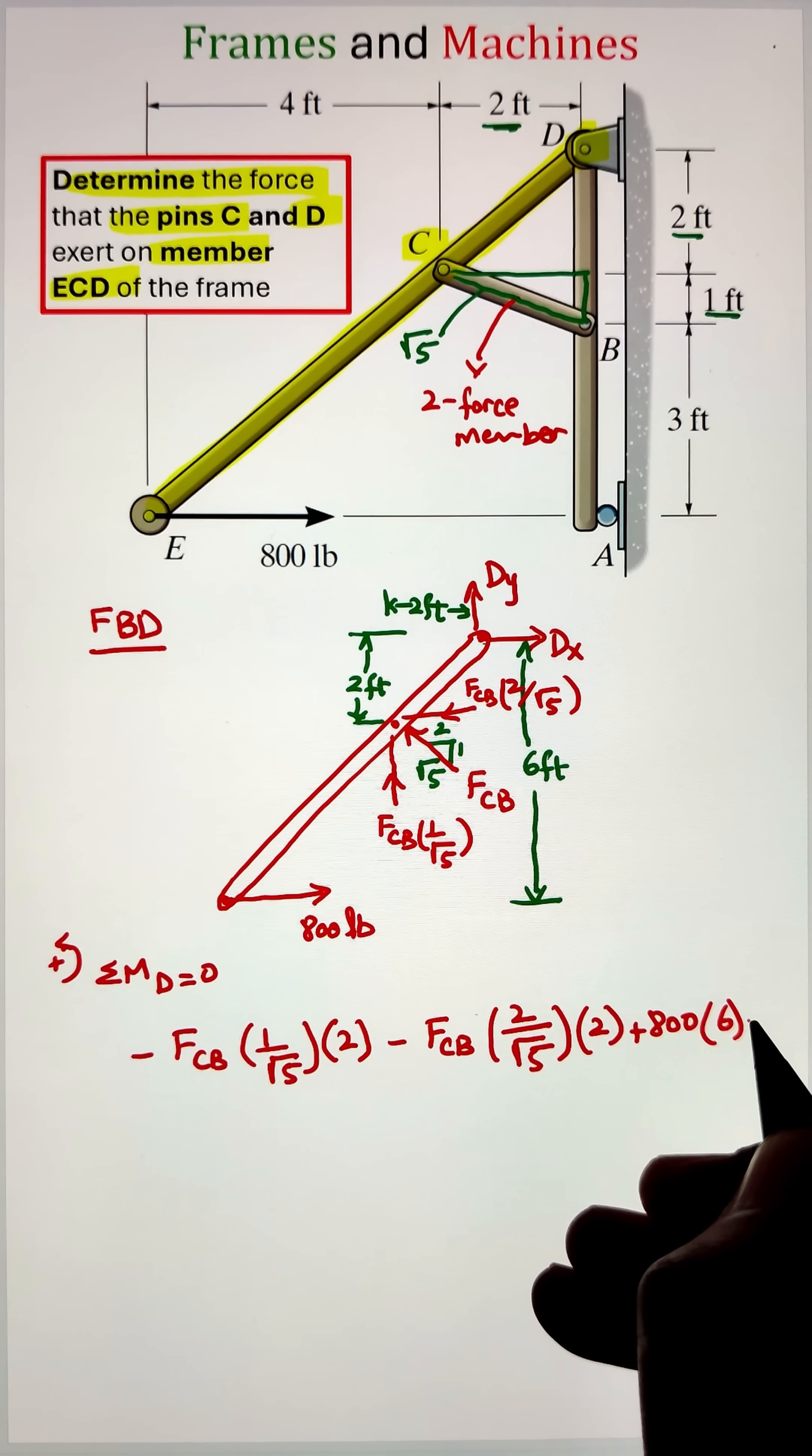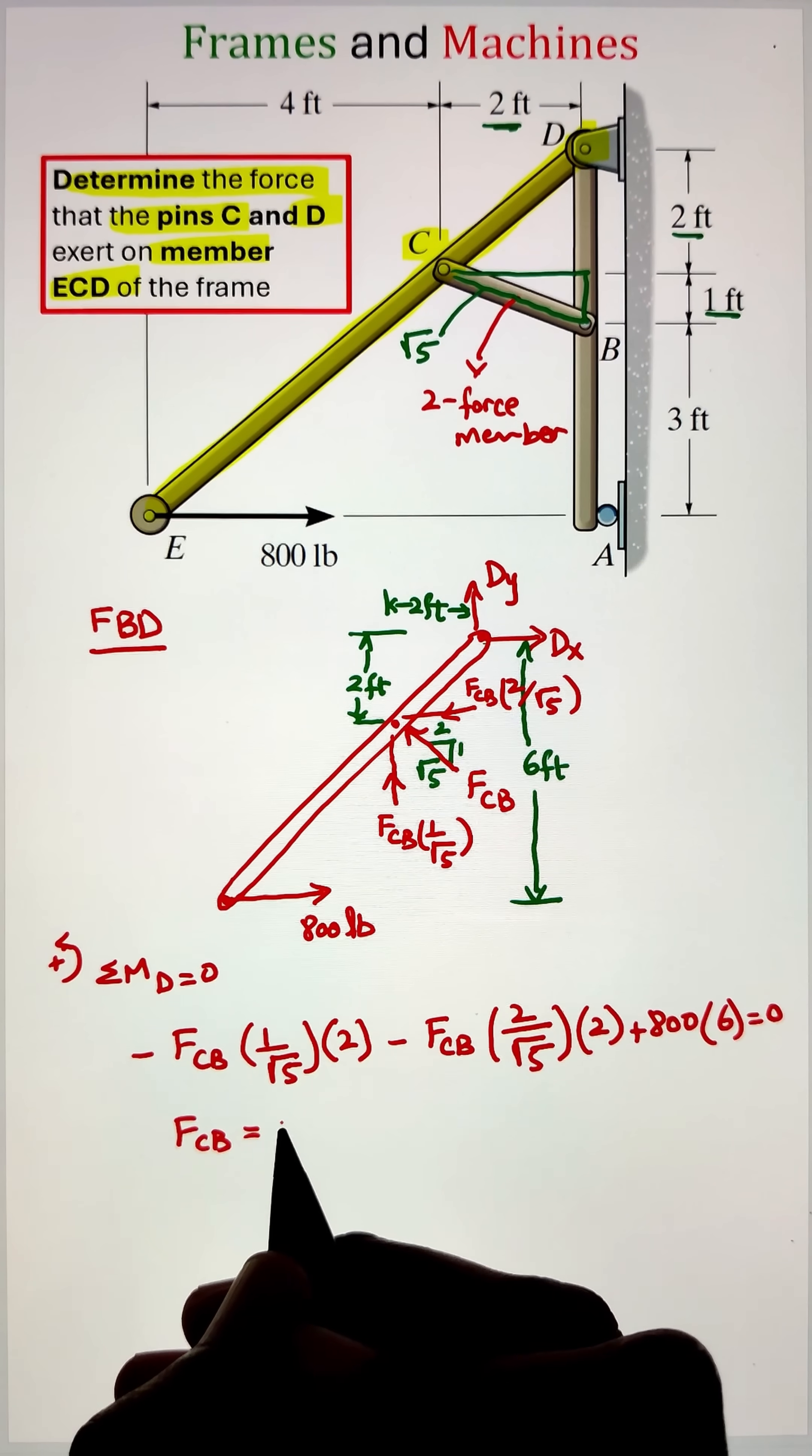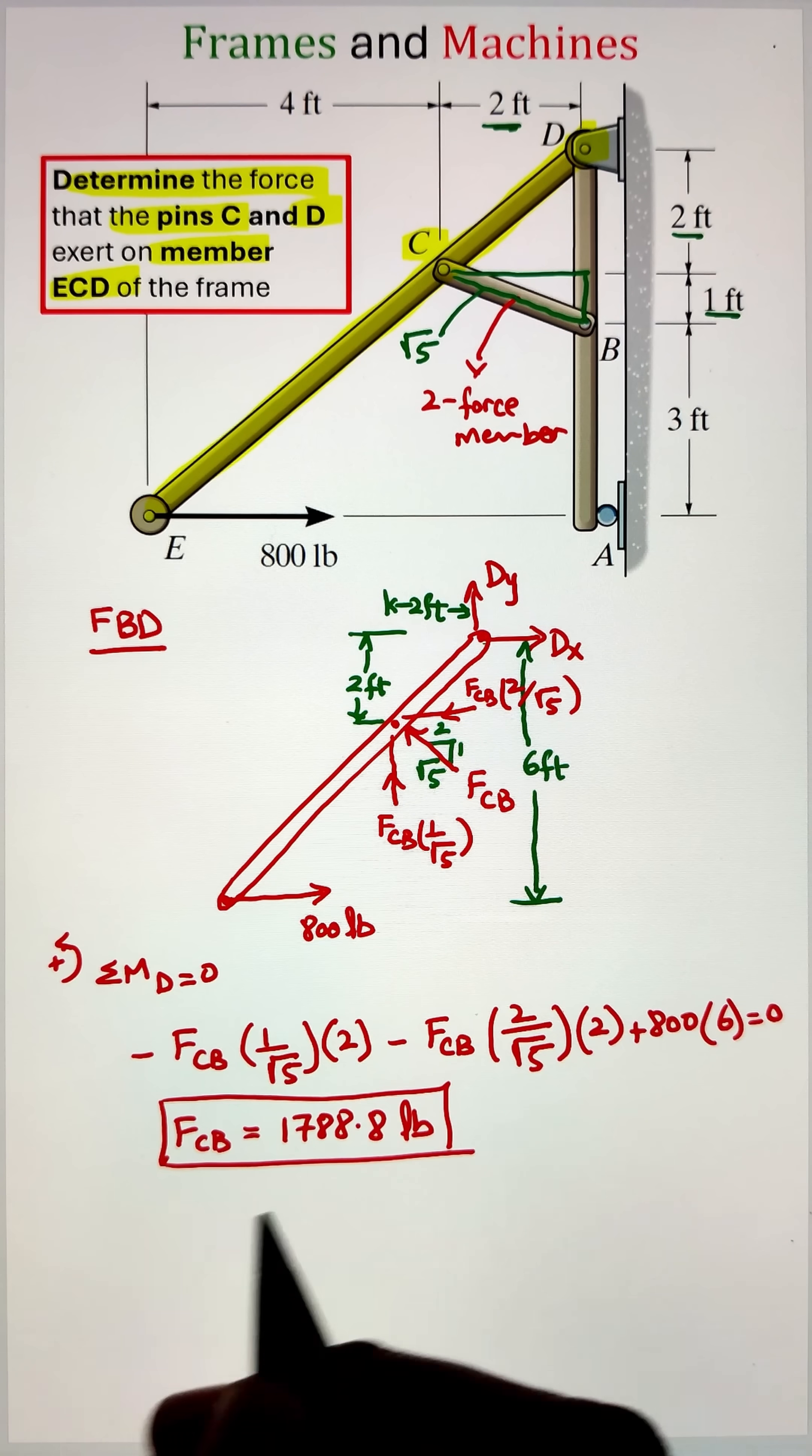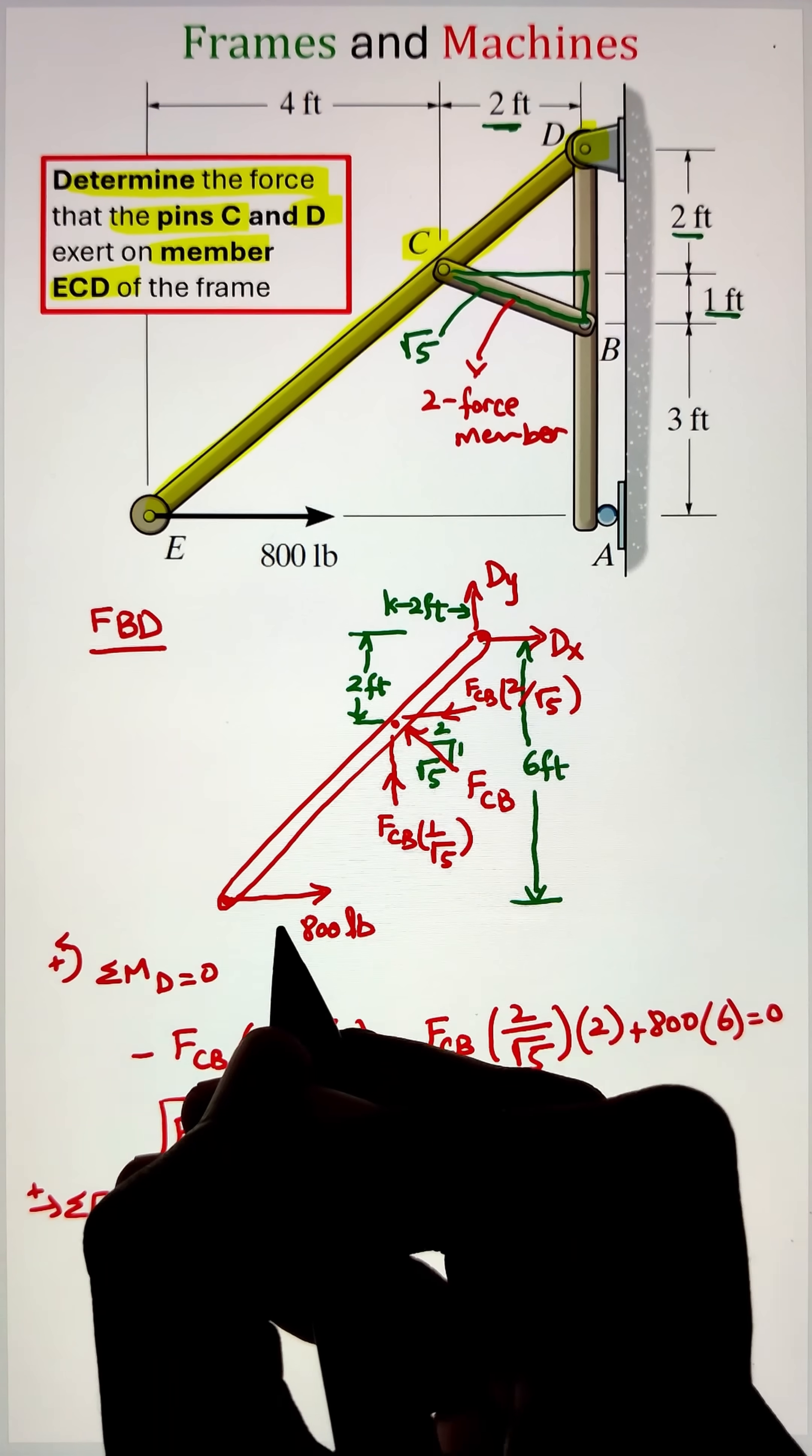The horizontal component is calculated by multiplying it with two over root five. Again, the moment arm is two feet and it is creating a clockwise moment as well. Finally, the 800 pound external load is creating a counterclockwise moment. Simplifying, we get our value of FCB as 1788.8 pounds.